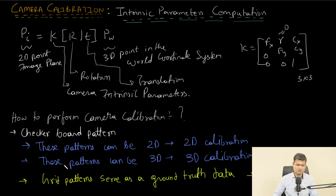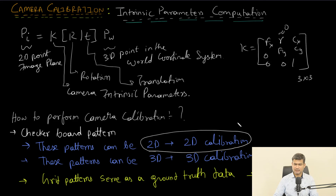Coming back to the calibration process, we'll be focusing on 2D calibration using a grid pattern as ground truth data, assuming all feature points lie on a plane so that their z-coordinates are zero. The next question is: what is this 2D calibration process and how do we compute the camera matrix K? This will be studied in the next part of the lecture.